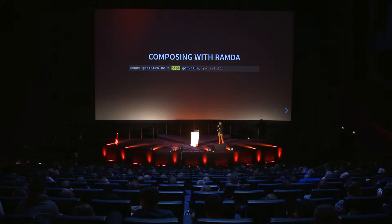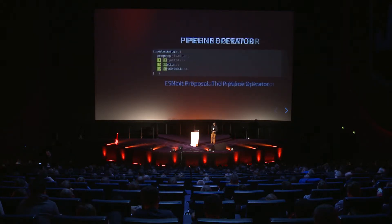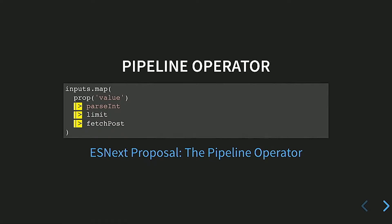We can compose functions manually, but again we can use Ramda's pipe function. pipe takes a list of functions and composes them — calling the first, passing its result to the second, and so on. The good news is that maybe in the future we won't even need this, because there is a proposal to include the pipeline operator into JavaScript itself, which shows it's a recognized and important concept.